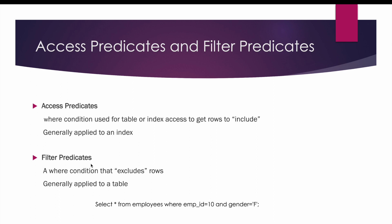Coming to filter predicates: filter predicates are those predicates in the WHERE clause used to exclude rows. We filter out unwanted rows from the accessed rows using filter predicates, which are generally applied on a table. In our example, we already accessed employee_id = 10 as the access predicate, getting one row. If that row has gender = 'F', it is retained; if not, it is discarded. Since we are excluding rows based on gender = 'F', the gender column becomes your filter predicate.